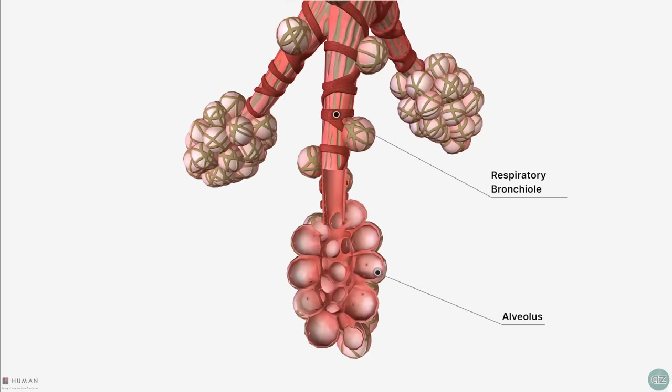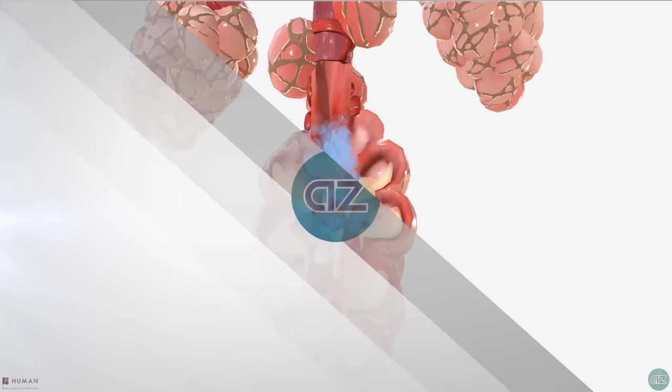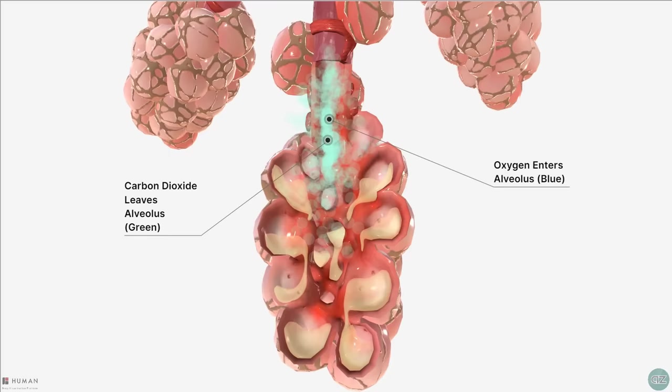The alveoli are the tiny air-filled pockets responsible for gas exchange. We have around 600 million of these alveoli and they are responsible for exchanging oxygen and carbon dioxide between the blood and the air we breathe in.